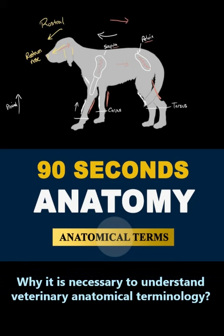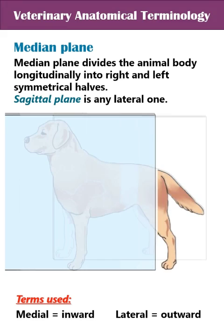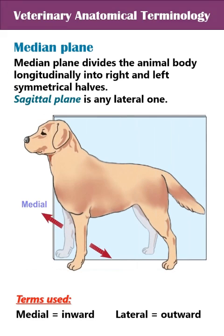Understanding veterinary anatomical terminology is necessary to locate specific body structures accurately. The median plane defines the animal body longitudinally into right and left symmetrical halves, while the sagittal plane is any lateral one. Medial means close to the median plane, while lateral means moving away from the median plane. Intermediate is between medial and lateral structures.